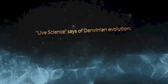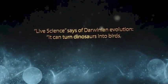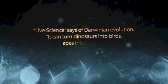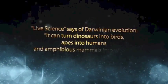Live Science says of Darwinian evolution: it can turn dinosaurs into birds, apes into humans, and amphibious mammals into whales. What Darwin showed in his work on evolution and natural selection is that we don't need to invoke any supernatural force or power to account for the development of life through time on Earth.